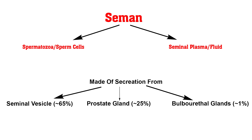Semen analysis, or seminogram or spermiogram, is a comprehensive series of clinical tests that evaluates the quality and quantity of a semen sample. The most important and commonly analyzed parameters included under semen analysis are: liquefaction time, amount, color, pH, odor, viscosity, and sperm motility.